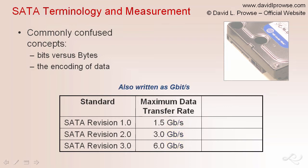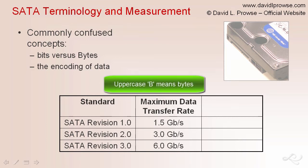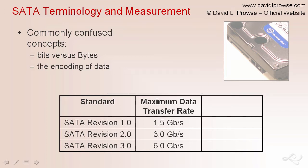This is denoted by the lowercase 'b'. For example, 1.5 lowercase Gb/s means 1.5 gigabits per second. Some readers use an uppercase B, which is not correct, because that would denote bytes. Serial technologies such as SATA are normally measured in bits — for example, 1.5 gigabits per second, 3.0 gigabits per second, and so on. Ultimately, that number is later converted to bytes, for example 150 megabytes per second (uppercase MB/s).